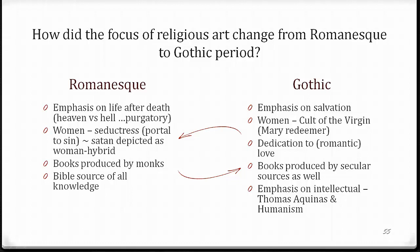Women have been depicted as the seductress, as the portal to sin, and Satan is usually depicted as a hybrid of some kind of woman, or sometimes an animal and a woman. When Satan is depicted as the snake in the Garden of Eden, it's usually a hybrid species of snake, or female snake. Also, book production was exclusively in the monasteries by monks, and the Bible was seen as the major source of information and knowledge.